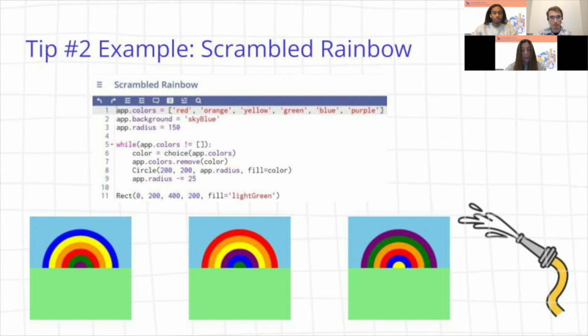So this next example here shows how we can use randomness with our lists. So here at the top, we define this list called colors, and it contains all the colors in a rainbow. And then we make the background color sky blue, and then the starting radius is going to be 150. So then while our colors list is not empty, we're going to randomly choose a color from this list, and then we'll remove it from the list. And then we'll make a circle with the current radius, and then set the fill to be the color we chose, and then decrease the radius by 25. So as you can see, as we randomly choose colors from this list, we're building a rainbow, but not in the stereotypical rainbow order. We're just choosing colors at random, but each color is only chosen once. And then once we choose all the colors, the while loop ends, and we have this rainbow drawing drawn. And then we draw the green square on the bottom to cover up the bottom half of the circle, so that it actually looks like half of a rainbow.